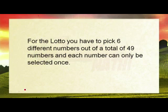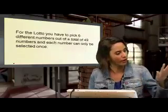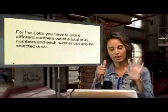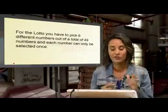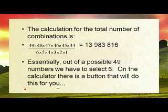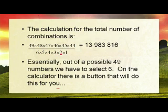For the lottery you have to pick six different numbers — you can only pick each number once. You can't pick 49 twice. You've got six numbers to pick, each one once, out of a total of 49 numbers. The calculation for the total number of combinations is: 49 × 48 × 47 × 46 × 45 × 44, over 6 × 5 × 4 × 3 × 2 × 1.